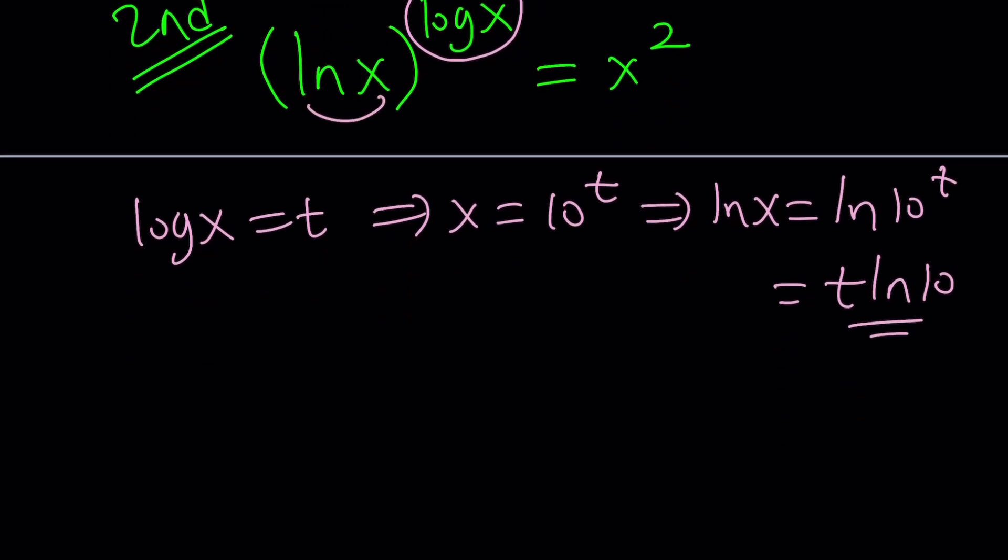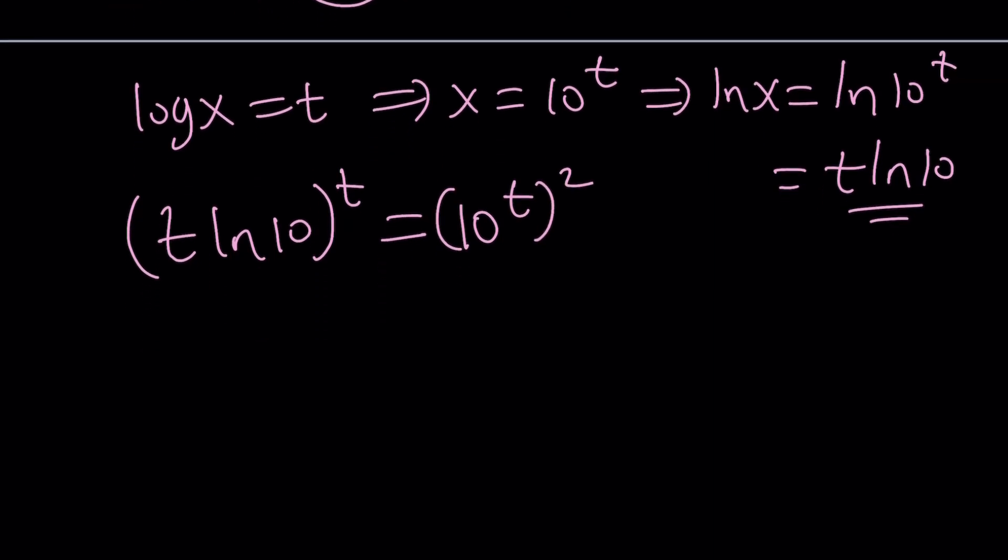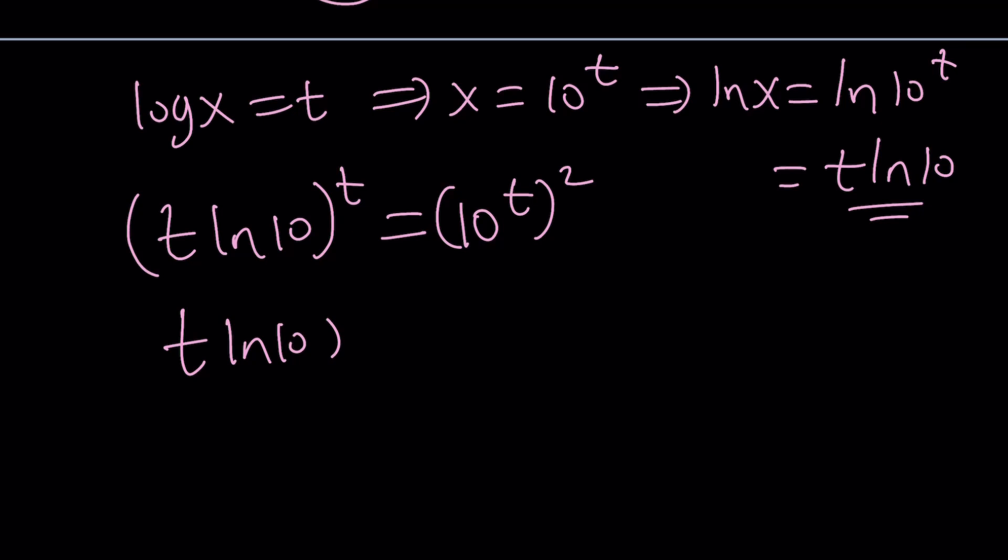So, ln x we can replace with t ln 10. Raise it to the power t. And that equals x squared, which is 10 to the power t squared, which you can write in so many different ways. t ln 10 to the t equals 10 to the power 2 to the power t. And again, we kind of run into a situation where we can kind of replace t with 0, right? And t equals 0 will give you the exact same solution. But here's one thing that I want you to think about.